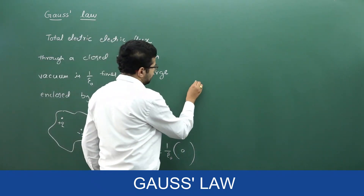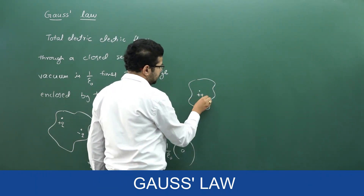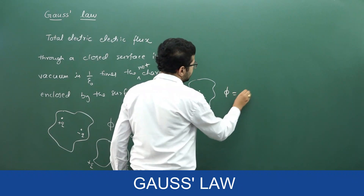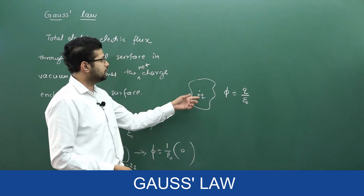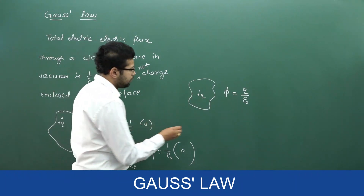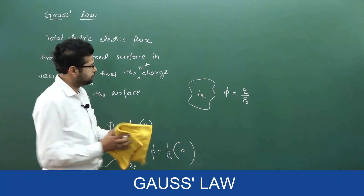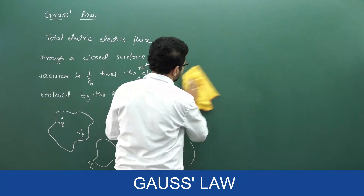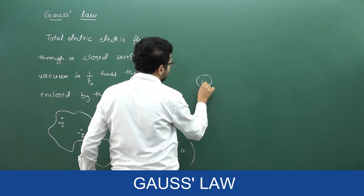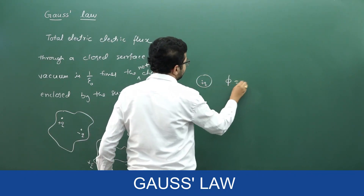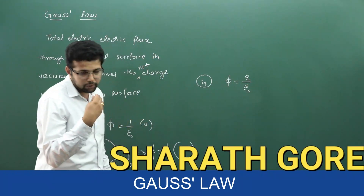Now one more example. If there is a closed surface and there is a charge plus q inside, the flux enclosed is q by epsilon naught, that is 1 by epsilon naught times q. For example, I will take a spherical surface — a spherical closed surface with a charge plus q at the center. Flux through the surface is q by epsilon naught, that is 1 by epsilon naught into q.